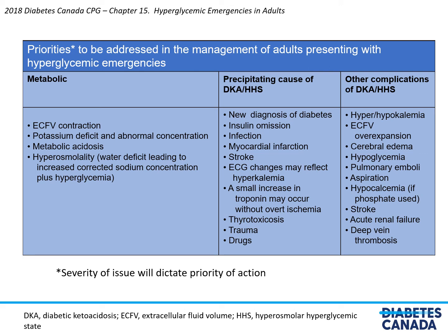Complications of DKA and HHS must also be looked for, including hyper- and hypokalemia, ECF volume overexpansion, cerebral edema — particularly important in children — hypoglycemia, pulmonary emboli, aspiration, hypocalcemia, phosphate depletion, stroke, acute renal failure, and deep vein thrombosis. The severity of each will dictate the priority of action.